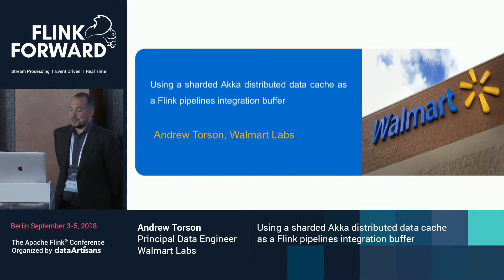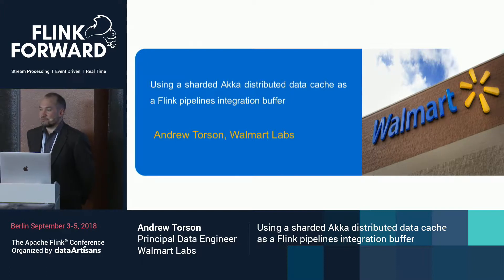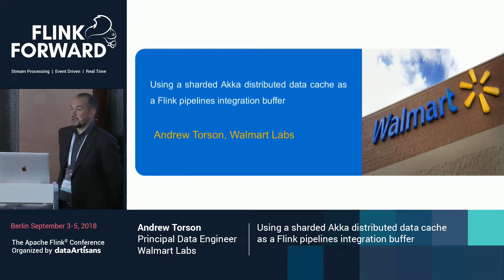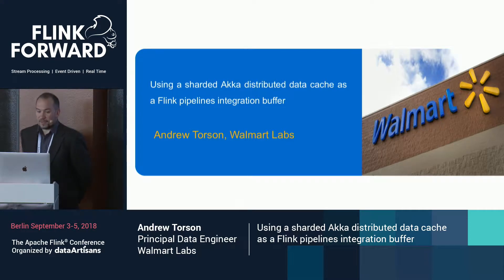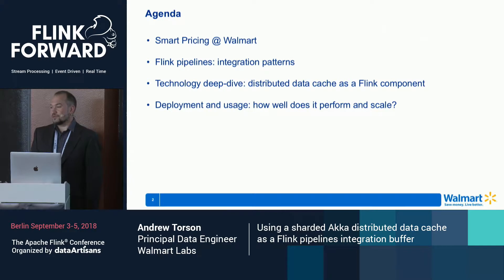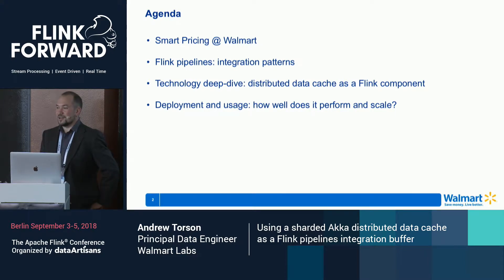The subject of today's talk is that we tend to use many Flink pipelines. If you start adopting Flink, it's not a single pipeline you'll be running — you'll be running many, probably even thousands or hundreds of pipelines. You need to integrate them somehow through a common data store, common data lake, or common buffers. Today I'm going to talk about one particular kind of buffer: a distributed cache. We have experience building such a buffer at large scale using Akka. I'll introduce Walmart Labs and what my group called Smart Pricing does, then we'll talk about how to integrate those pipelines, dive deep into implementing a distributed data cache buffer, and finally share some stories from actual production usage — the pitfalls and how well it performs.